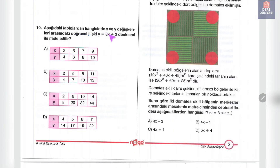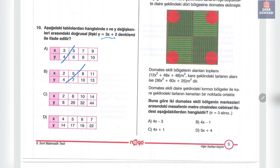Onuncu soruda hangi tabloda x ve y değişkenleri y=3x+2 denklemini ifade ediyor diye soruluyor. Şıklardan gidiyoruz: x=3 iken 3×3+2=11 olmalı; x=2 iken 3×2+2=8 olmalı; x=6 iken 3×6+2=20, x=10 iken 3×10+2=32. Doğru şık budur.